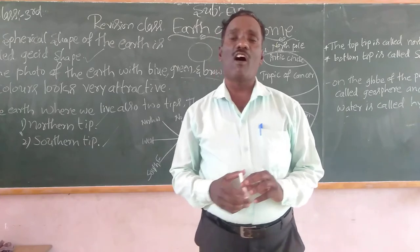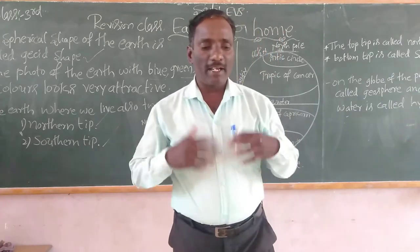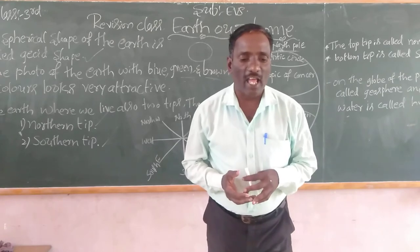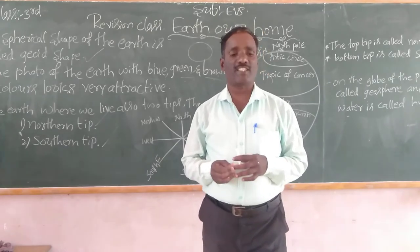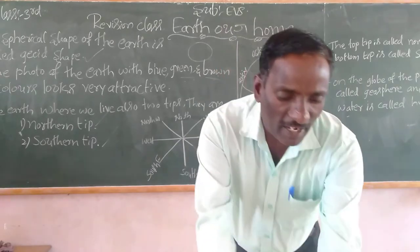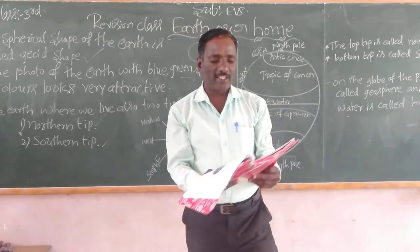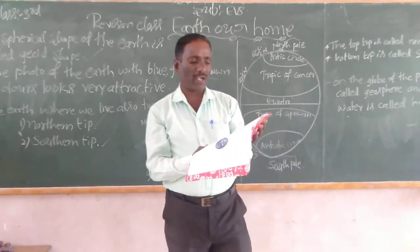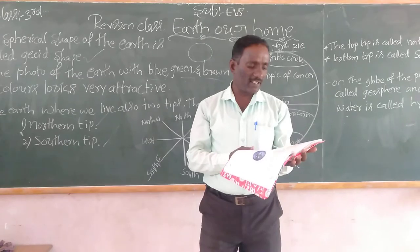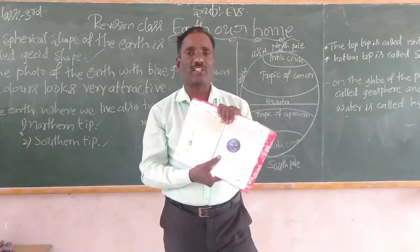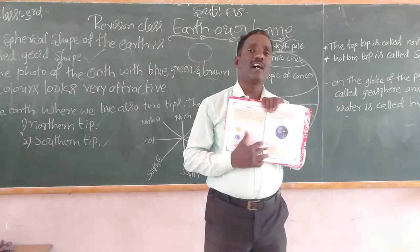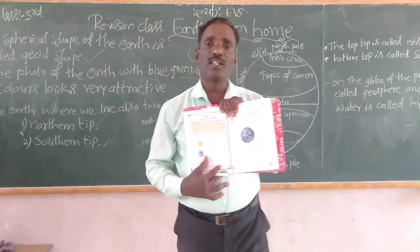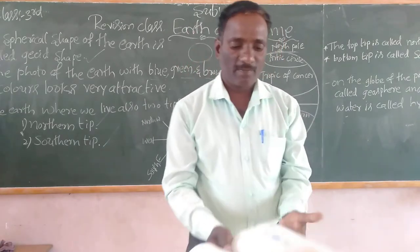We have remembered the identification of directions with the help of the sun. You have already learnt about your friends of the sky. Write the names of these friends. The friends of the sky: sun, moon, stars, etc.